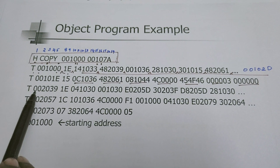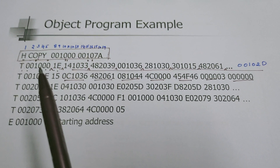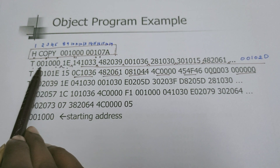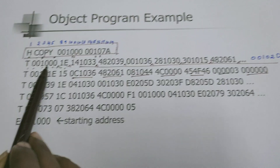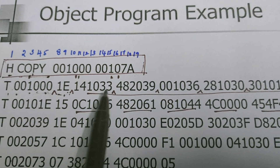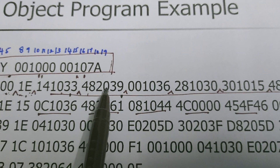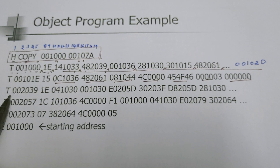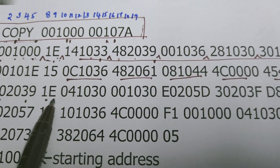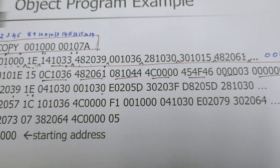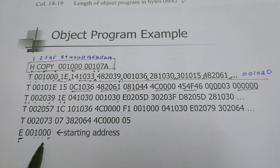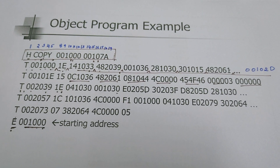Next, we will see the text records. There are several text records — the number depends upon the length of the object file. The text record begins with the letter T. Six columns contain the starting address of the text record, which is 1000 here. Then 1E is the length of the text record. Object codes such as 141033, 482039, and others are stored one by one. The next text record has a starting address of 2039 and a length of 1E. Finally, there is the end record, which begins with the letter E, and 1000 is the address from where the execution of this object file has to begin.